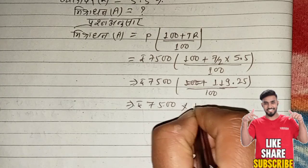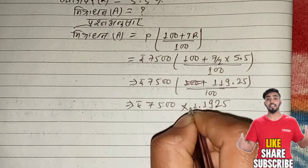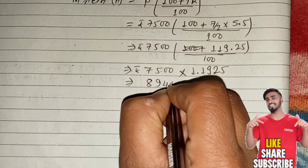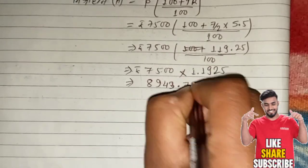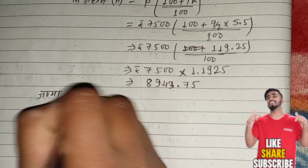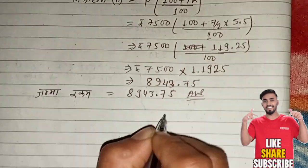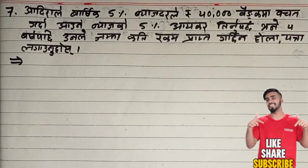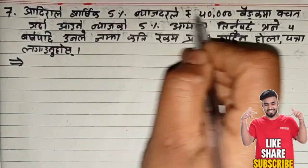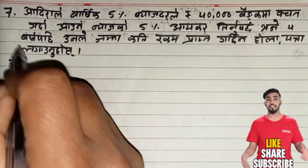Now we have to divide into 1.192.5 and then we divide into 1.192.5. It's equal to 1.850, is 44.75. The answer is the answer. Sorry, two venue.